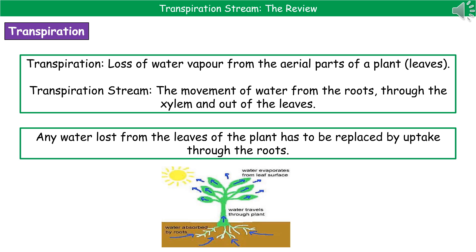Welcome to our review on the transpiration stream. First, we need to know a couple of key definitions. The first one, transpiration, is the loss of water vapour from the aerial parts of a plant or the leaves. And the second, the transpiration stream, is the movement of water from the roots through the xylem and out of the leaves.